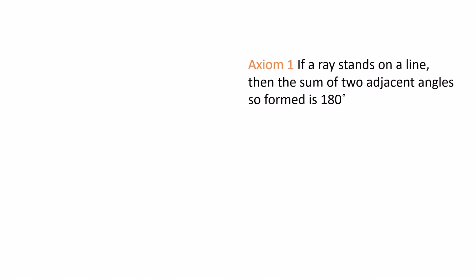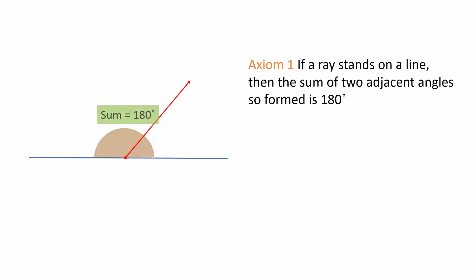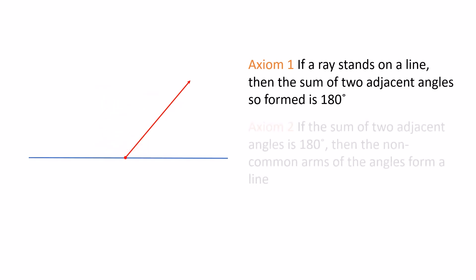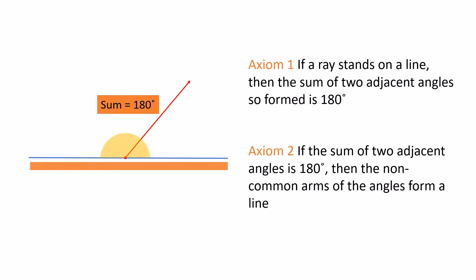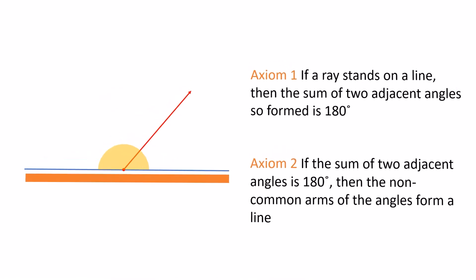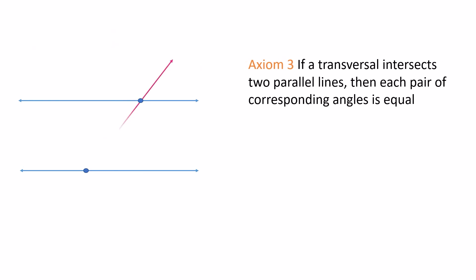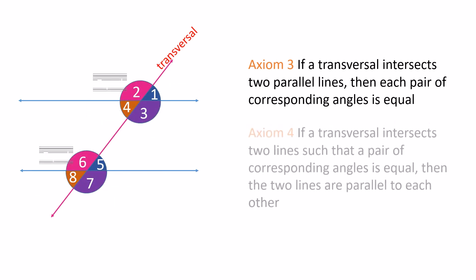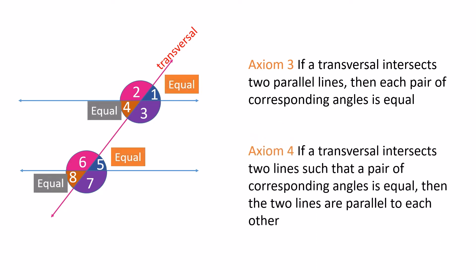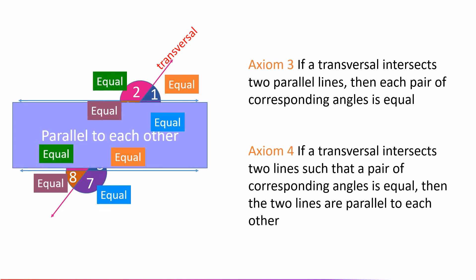Axiom 1: If a ray stands on a line, then the sum of two adjacent angles so formed is 180 degrees. Axiom 2: If the sum of two adjacent angles is 180 degrees, then the non-common arms of the angles form a line. Axiom 3: If a transversal intersects two parallel lines, then each pair of corresponding angles is equal. Axiom 4: If a transversal intersects two lines such that a pair of corresponding angles is equal, then the two lines are parallel to each other.